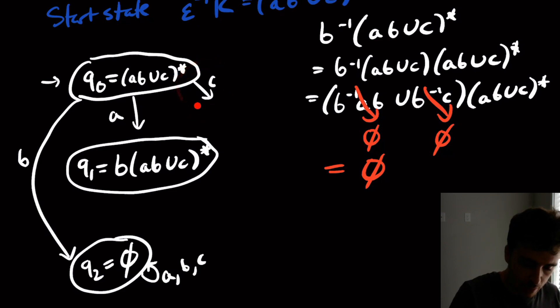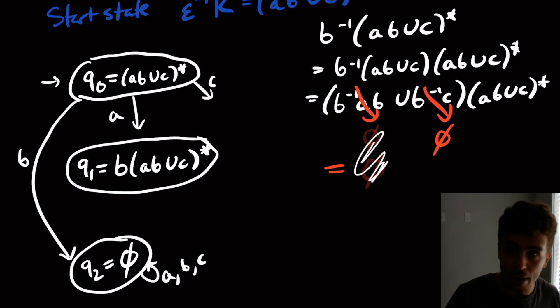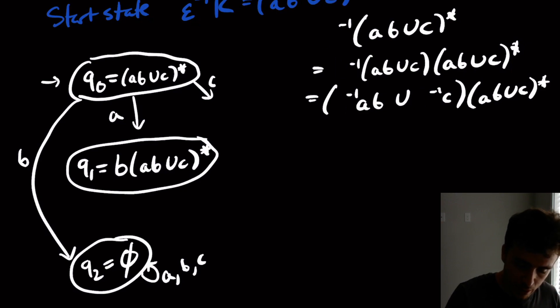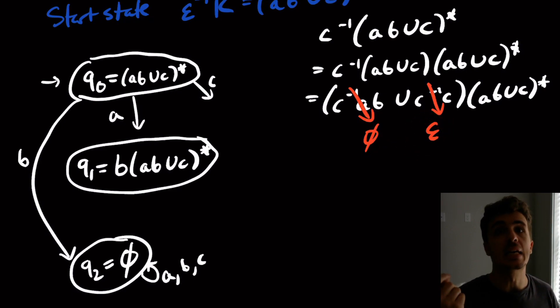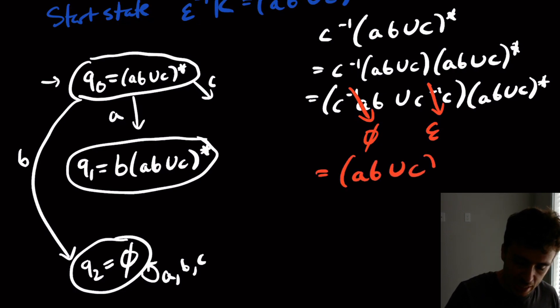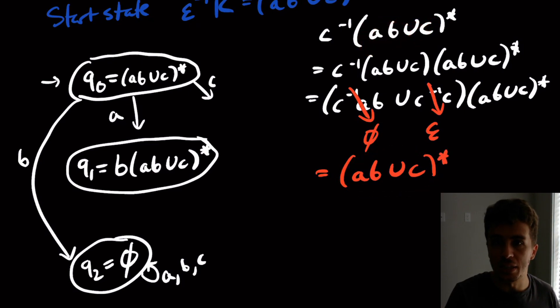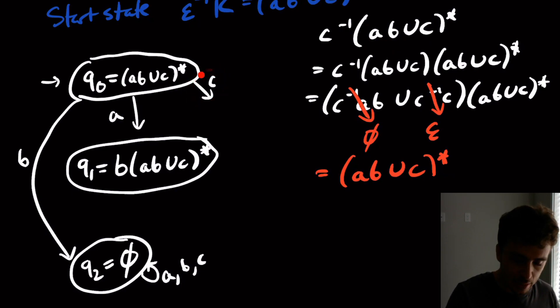So then what about an input C from this guy? Let's go back to the calculations we did over here and replace the B for the inverses with C. The first one again is going to give us empty set because we have C inverse A right here, and that gives us empty set. But this gives us C inverse C, which is going to give us the empty string, not empty set. So the empty set union the empty string is the empty string. But the empty string concatenated with anything is just the anything. So this is going to give us AB union C star, so it doesn't change the original regex when we apply the derivative.